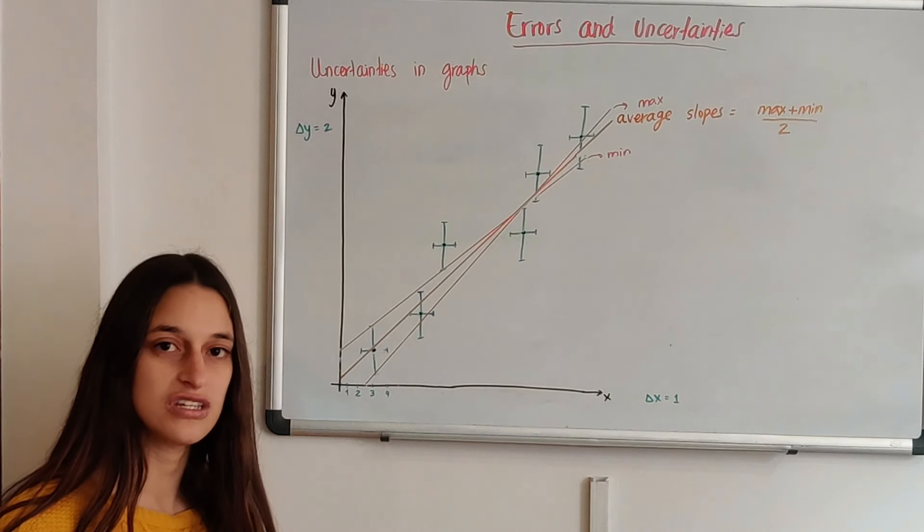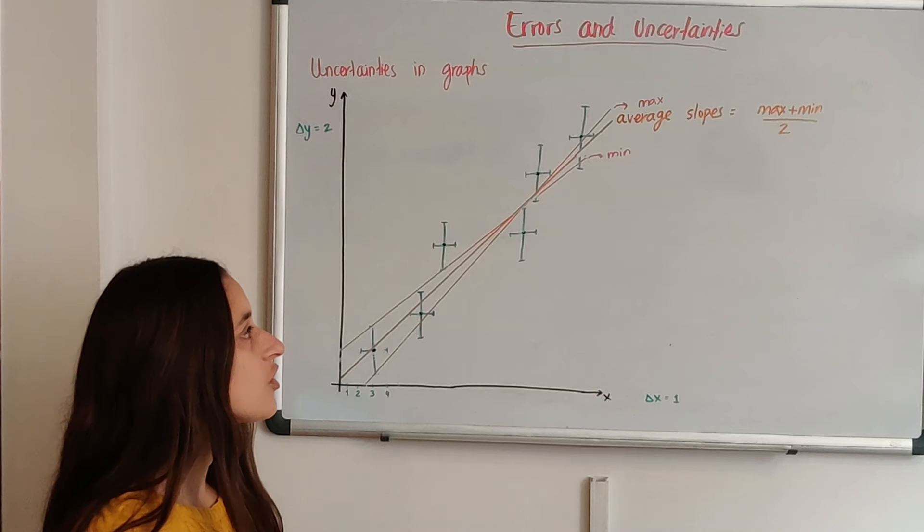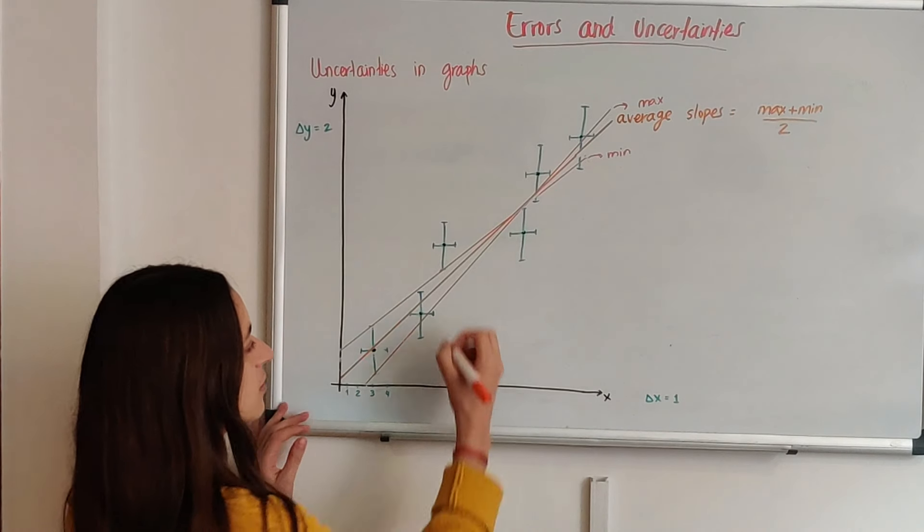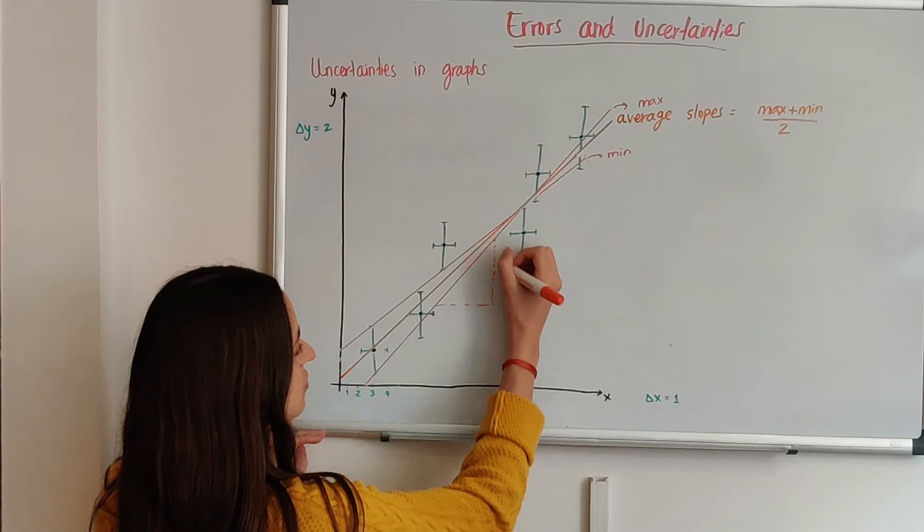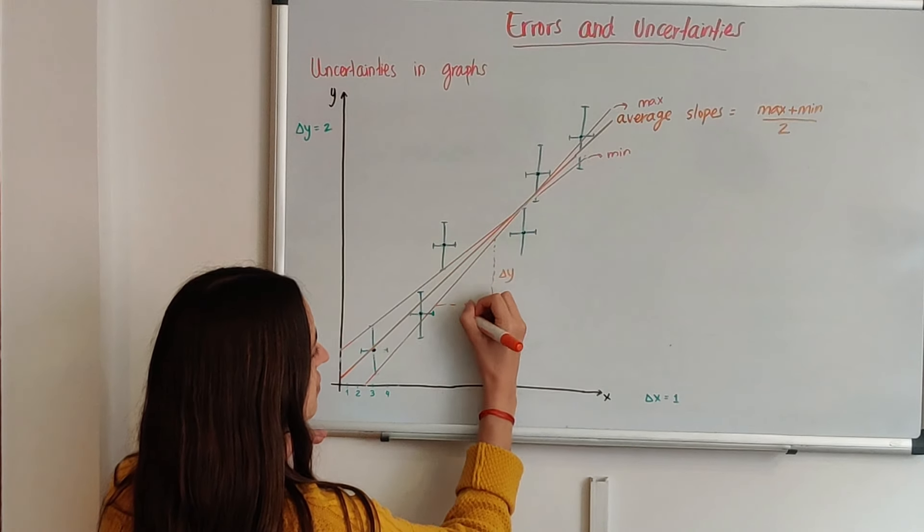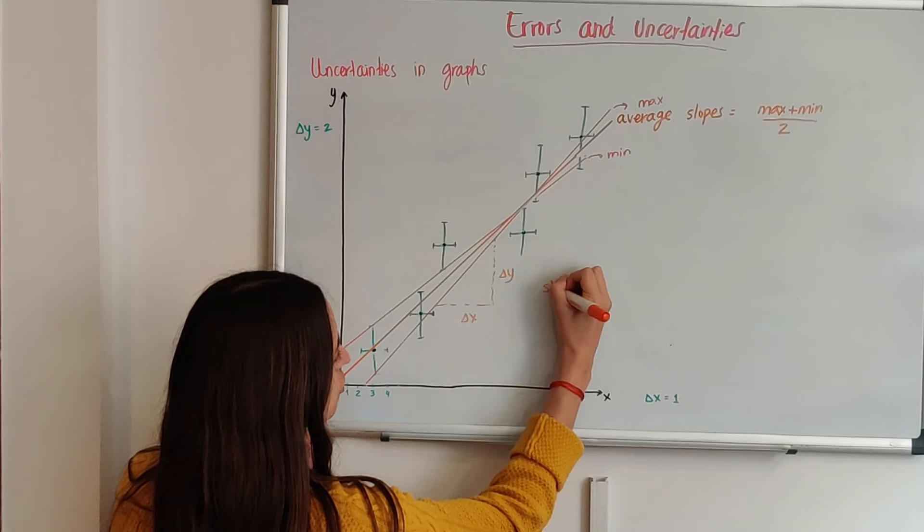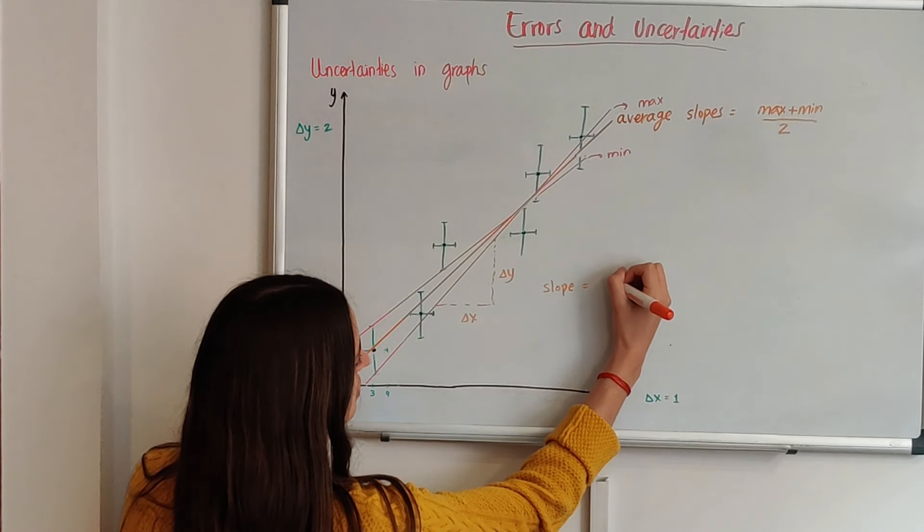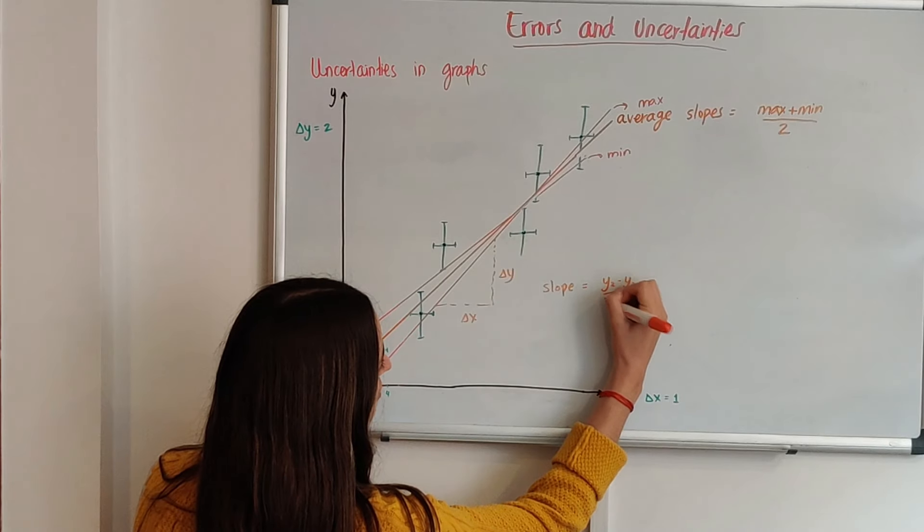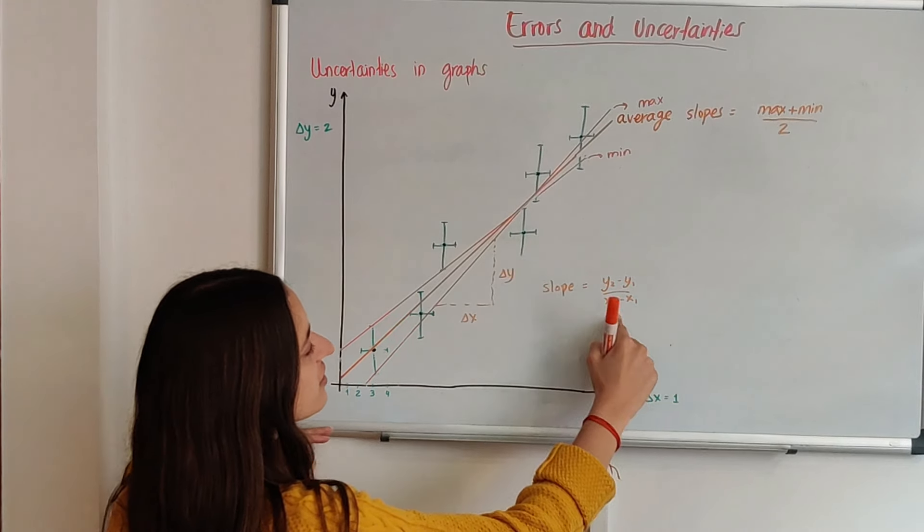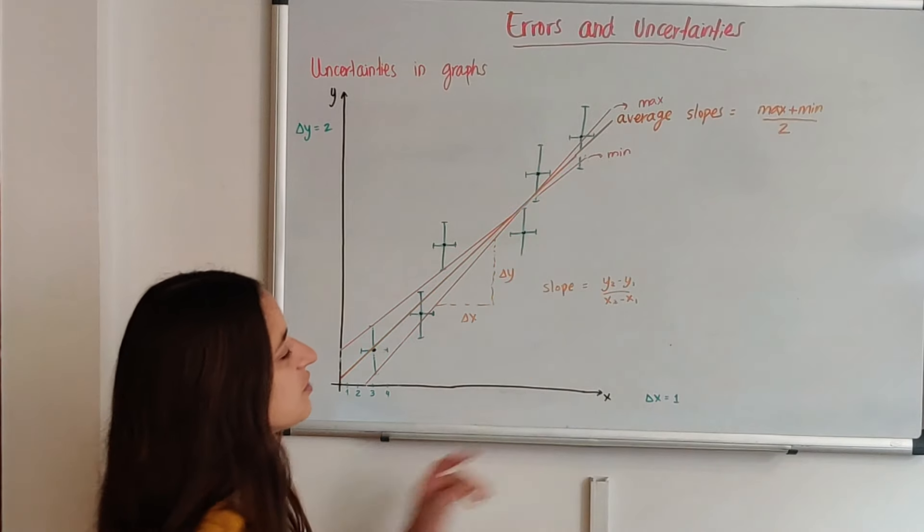So calculate, if you were doing this seriously for a lab report, you calculate the slope with the rise over run. So this is delta y, this is delta x. The slope is y2 minus y1 over x2 minus x1. You calculate that slope for the minimum and the maximum.